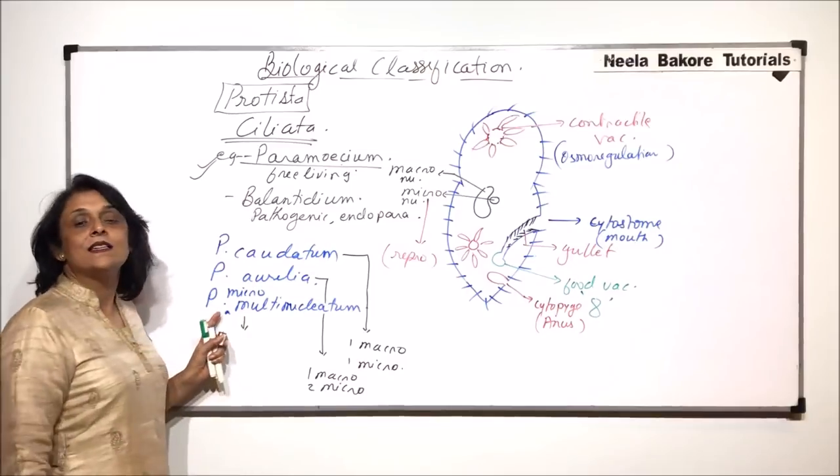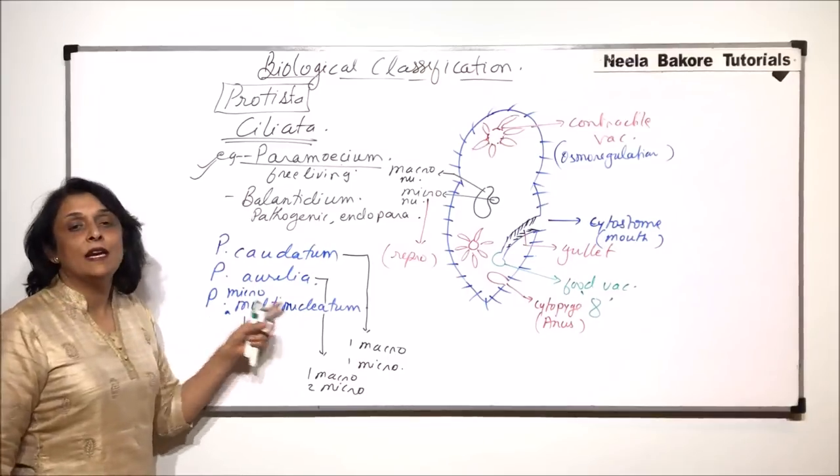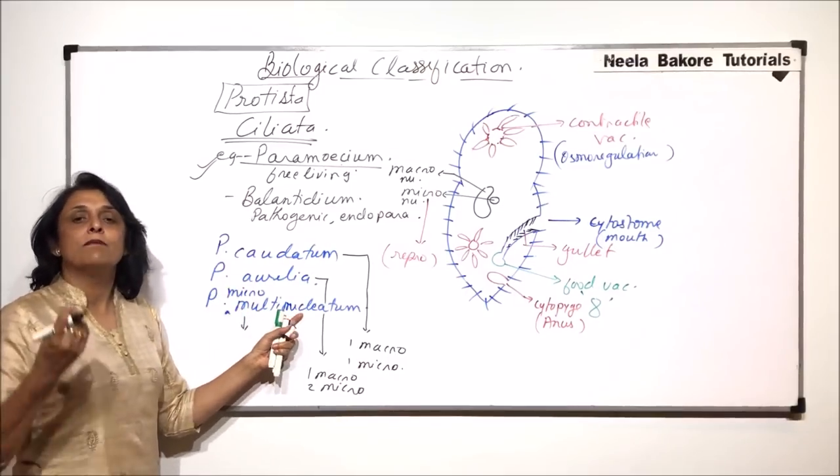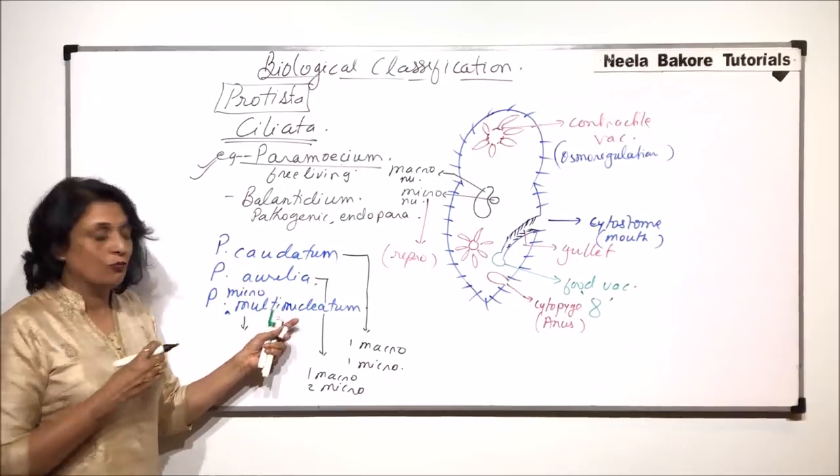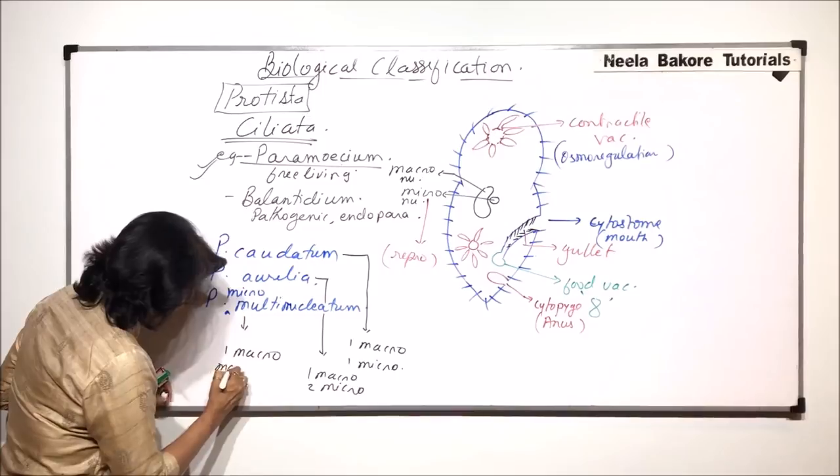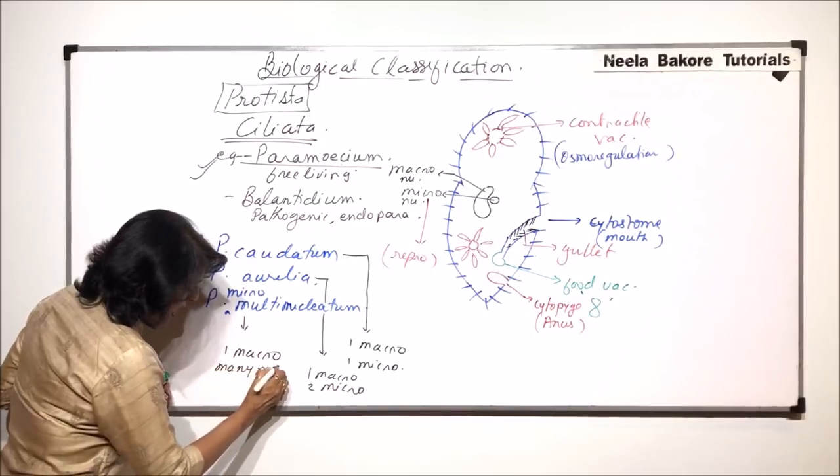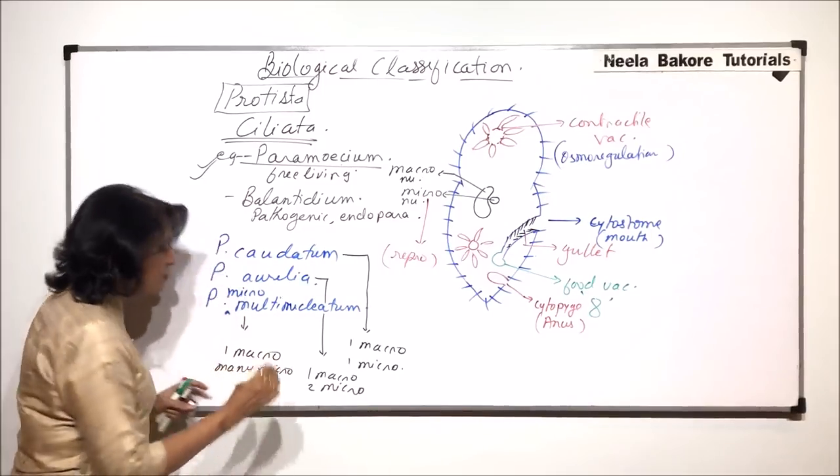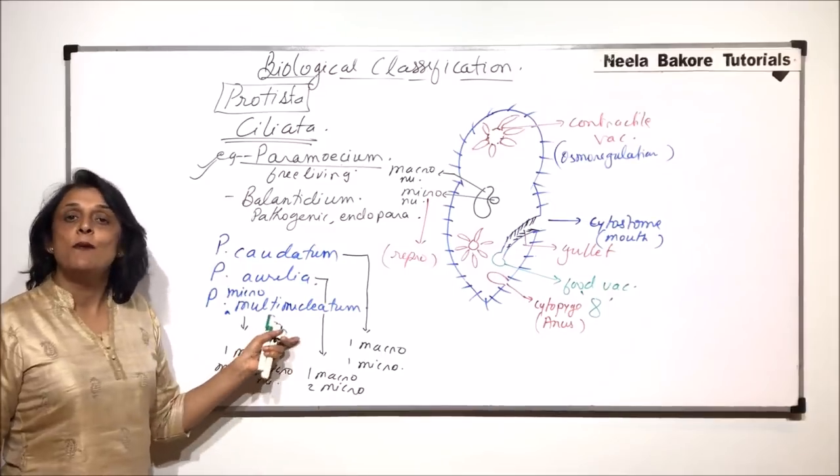In case of the third one, the name is telling us it is multi-nucleus: micromultinucleatum. There are many micronuclei, so it is one macro and many micronuclei present in each cell of paramecium.